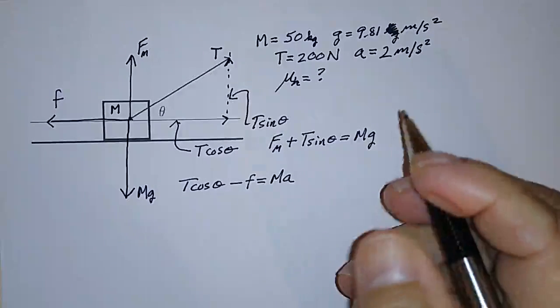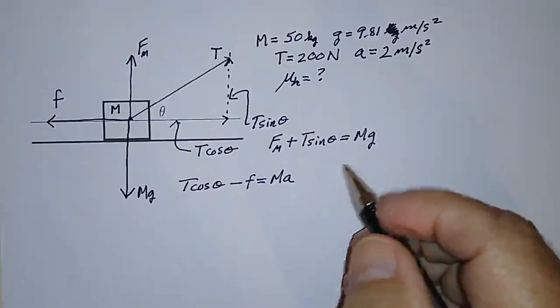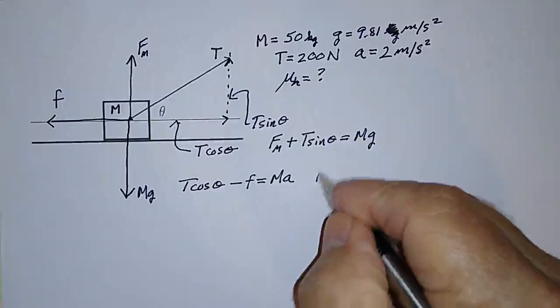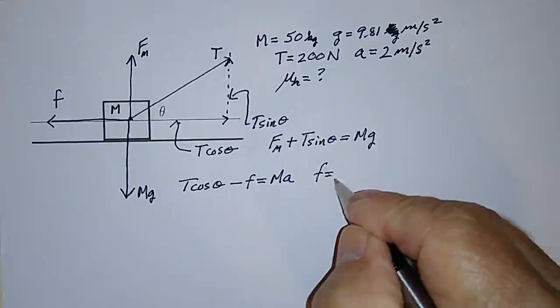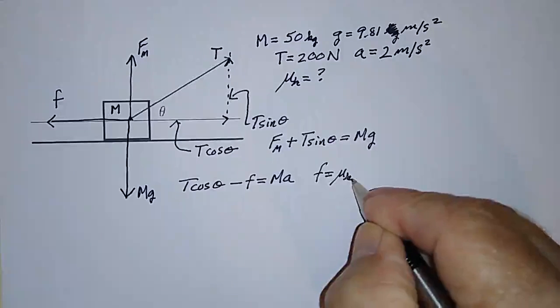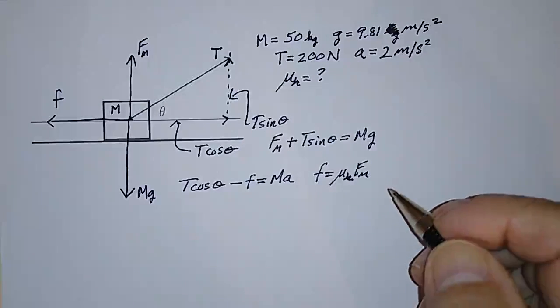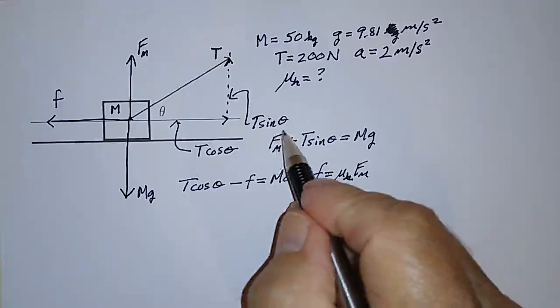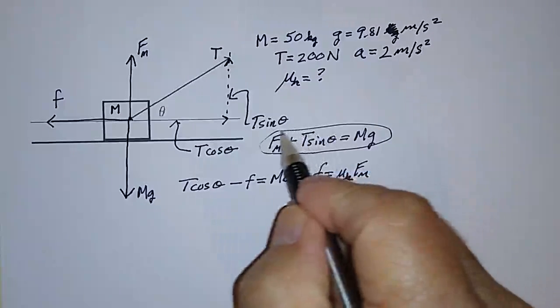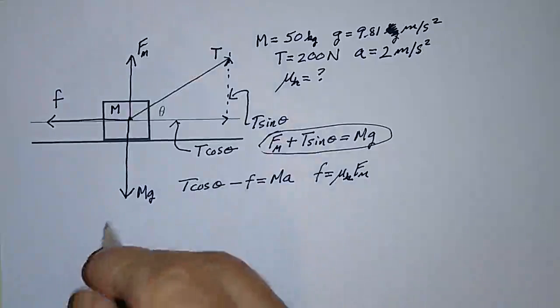The rest of this is algebra since the frictional force is equal to mu sub k times the normal force. So how can we get what the normal force is? We can use this equation to get the normal force.